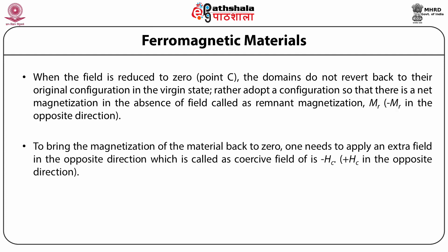To bring the magnetization of the material back to zero, one needs to apply an extra field in the opposite direction, which is called the coercive field, represented by minus HC and plus HC in the opposite direction.